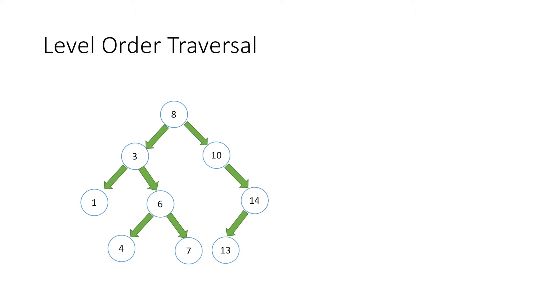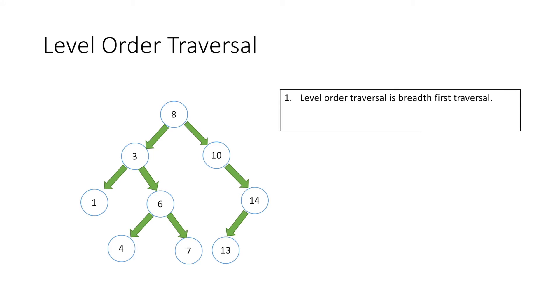Let's start with level order traversal. Suppose this is the binary search tree given to us and we have to perform level order traversal. Level order traversal is breadth first traversal, and in this method we traverse the tree level by level starting at level 0, and within the same level we move from left to right.